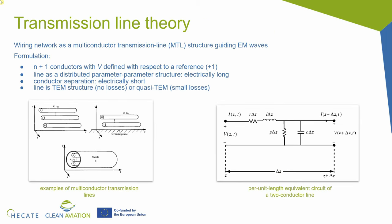The wired networks can be described using transmission line theory. To apply transmission line theory to wired networks, there are a series of prerequisites that we have to fulfill. We need it to be described as a series of n plus one conductors, where one plays the role of a reference. Then, the line has to be electrically long, because in transmission line theory, lines are described as a structure with distributed parameters — the inductance, conductance, resistance, and capacitance of the line are per unit length per meter. And then the line has to be a transverse electromagnetic structure, meaning no losses, or a quasi-TEM structure, meaning losses are very small.